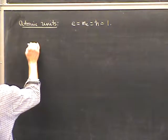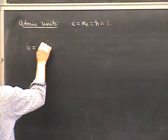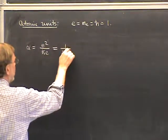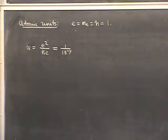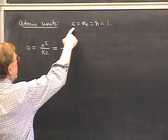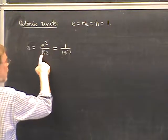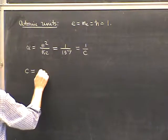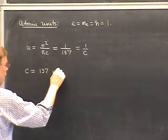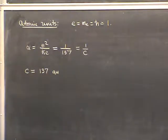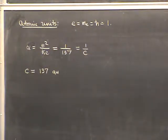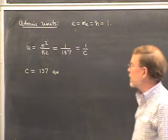To see what atomic units imply: the fine structure constant α = e²/ħc = 1/137 is dimensionless and has the same value in all units. In atomic units e and ħ go away, leaving just 1/c, so the speed of light equals 137 atomic units. This corresponds to the fact that the velocity of the electron in the ground state v = 1 (in atomic units) equals α times c, so c = 1/α.